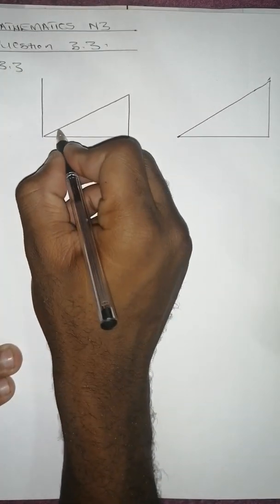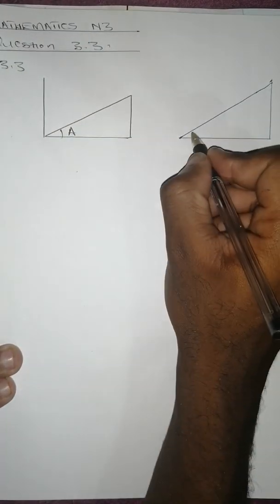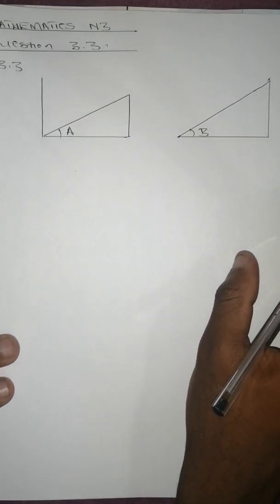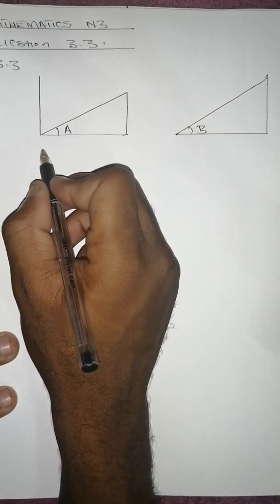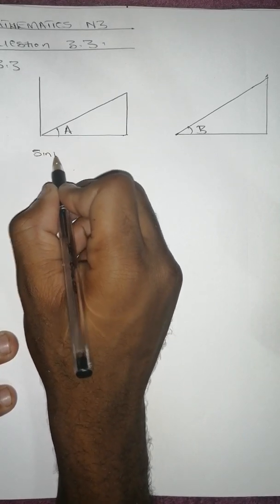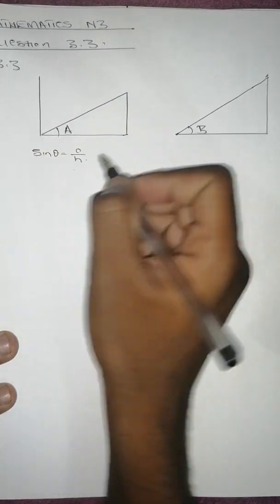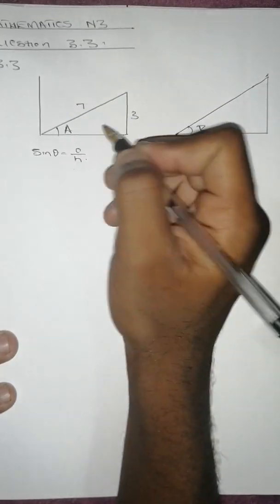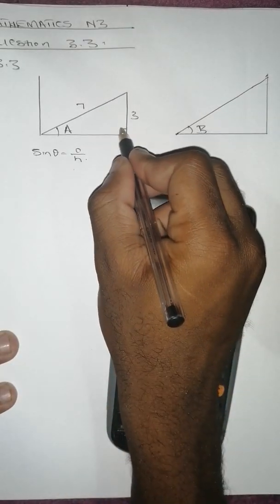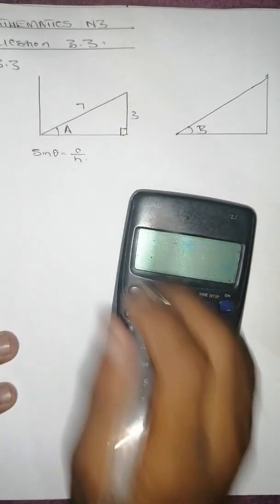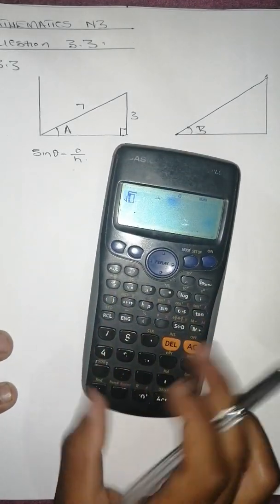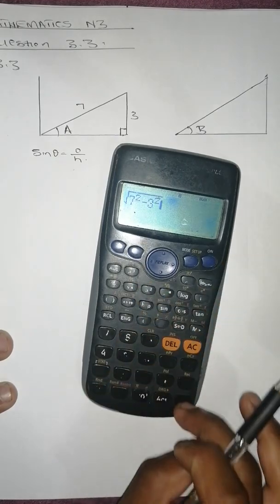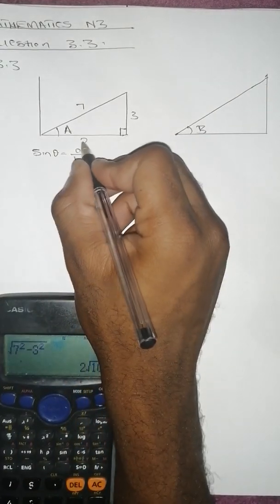We are told sine a equals 3 over 7. Since sine theta equals opposite over hypotenuse, the opposite side is 3 and the hypotenuse is 7. Using trigonometric ratios with right-angle triangles and Pythagoras, the adjacent side is the square root of 7 squared minus 3 squared, which equals 2 root 10.